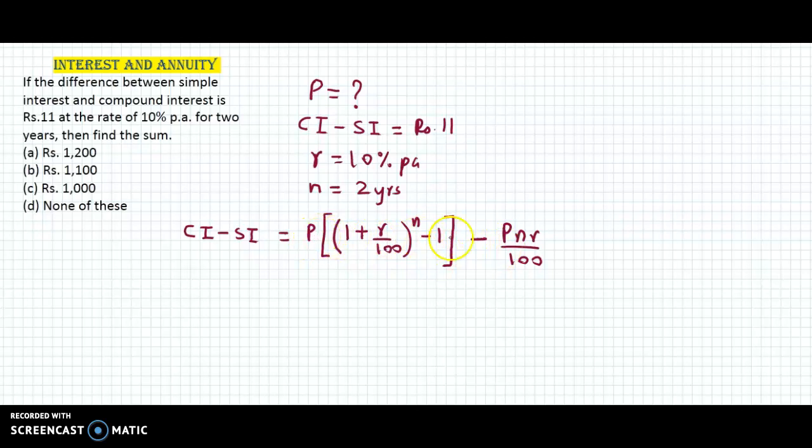If you observe both formulas, we can take P as the common factor. So we obtain CI minus SI equals P times (1 plus R by 100) raised to N minus 1, minus—now we have taken P common—so we are left with N into R by 100.